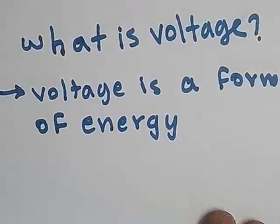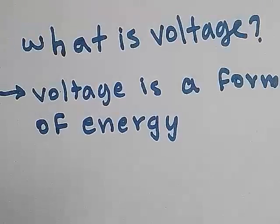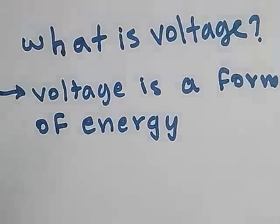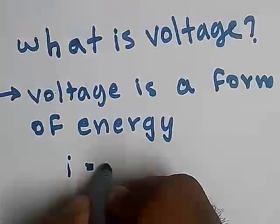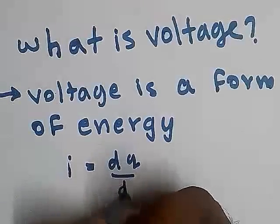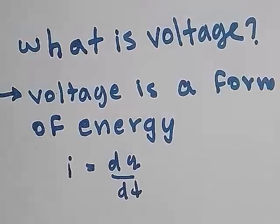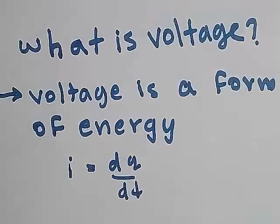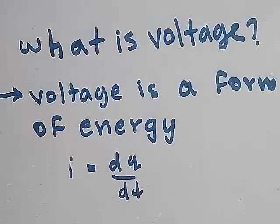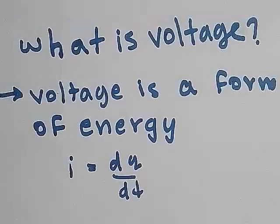What is voltage? Voltage is a form of energy. We know current is nothing but rate of flow of charges, that is dq by dt. To have a current flow in a conductor we have to move charge from one point to another. To move charge from one point to another, some energy is needed. That energy needed to move charge from one point to another in a conductor is known as voltage. So voltage is a form of energy.